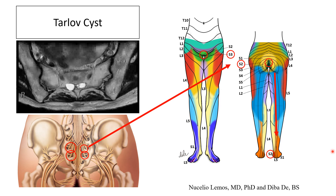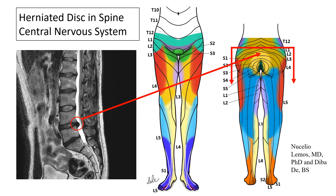Furthermore, since the sacral nerve serves the bowel, bladder, and sexual function, there may be associated organ symptoms. Many healthcare professionals do not understand how to interpret this combination of symptoms, so you may need to bring in a diagram like this asking for neurological evaluation. The patient whose MRI you see here suffered for years before getting the correct diagnosis and surgical management because nobody looked at the dermatome map or knew how to put it all together.